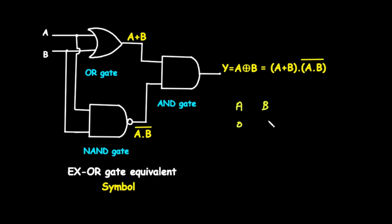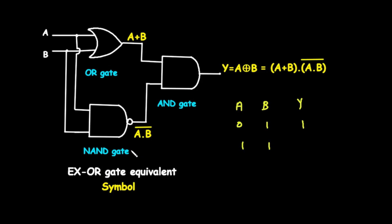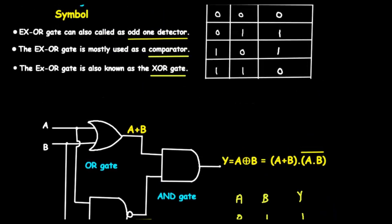Let's quickly test it. If A is zero and B is one: the OR gate gives zero plus one, which is one. The NAND gate gives the negation of zero AND one, which is the negation of zero, which is one. The final AND gate gets two ones as input, so its output is one — this matches our truth table. Now let's try A is one and B is one: the OR gate gives one, the NAND gate gives the negation of one AND one, which is zero. The AND gate gets a one and a zero, so its output is zero — this also matches our truth table.